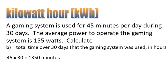Total time over 30 days. We're using 45 minutes per day over the course of 30 days. When you multiply those numbers, that's 1,350 minutes. However, we need our unit of time in hours. We divide by 60. That's 22.5 hours.